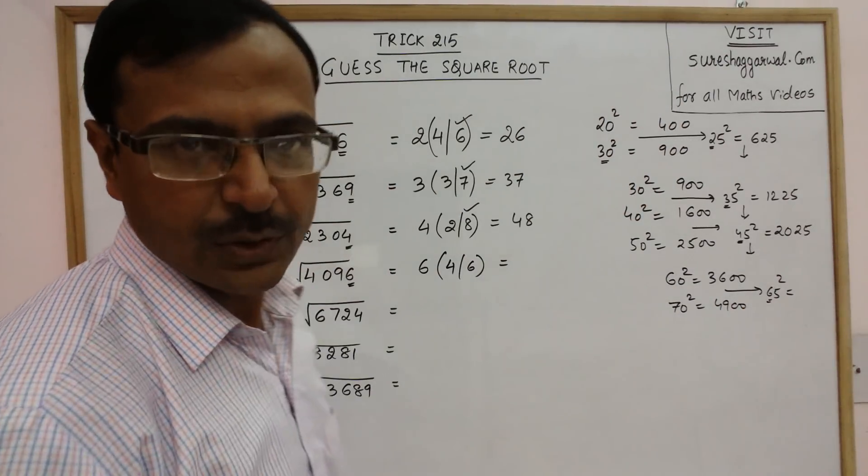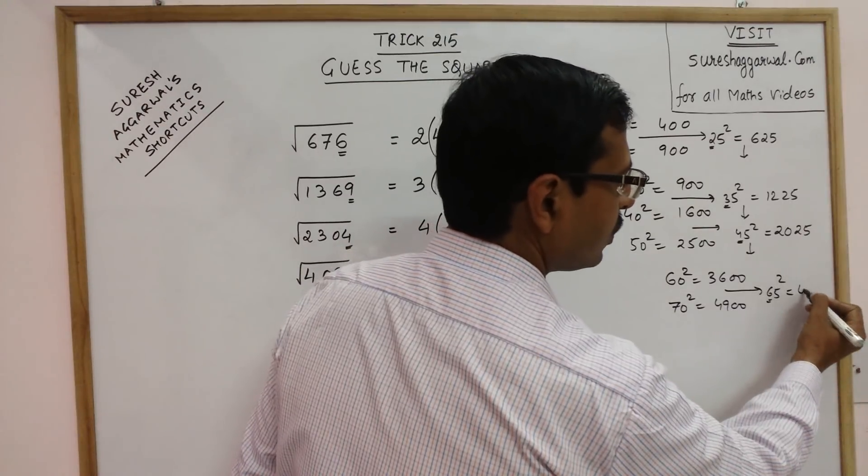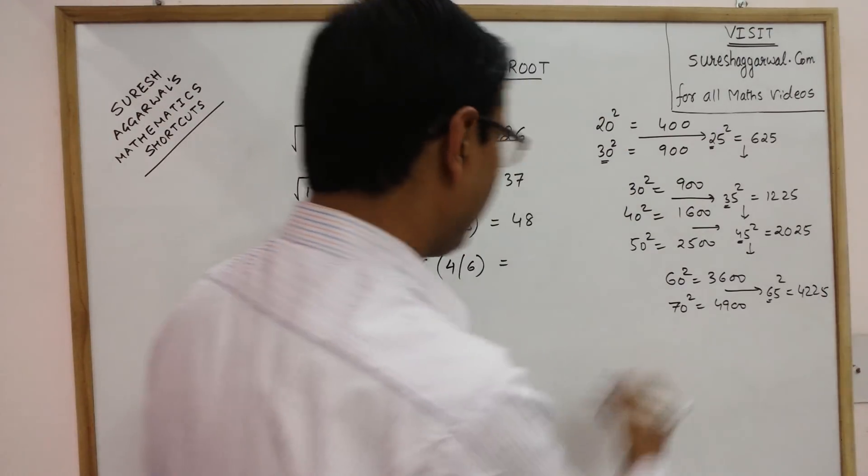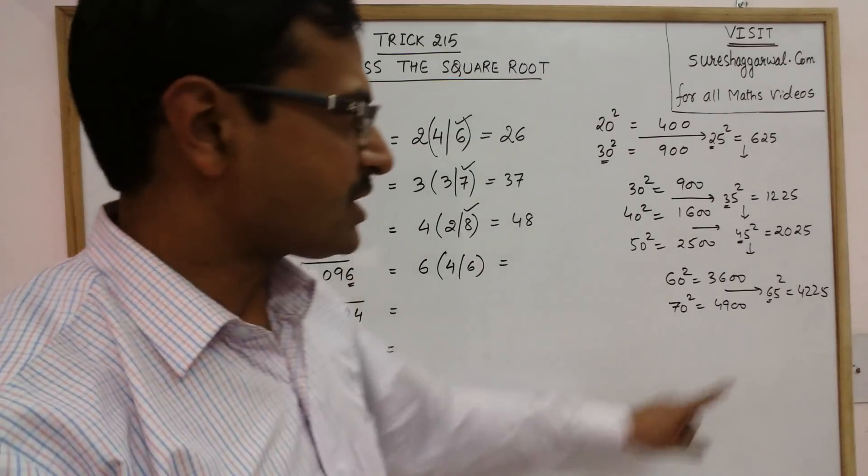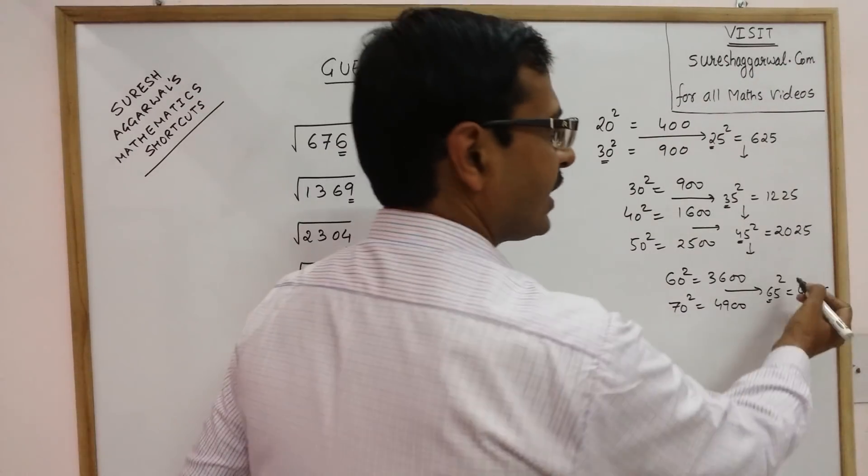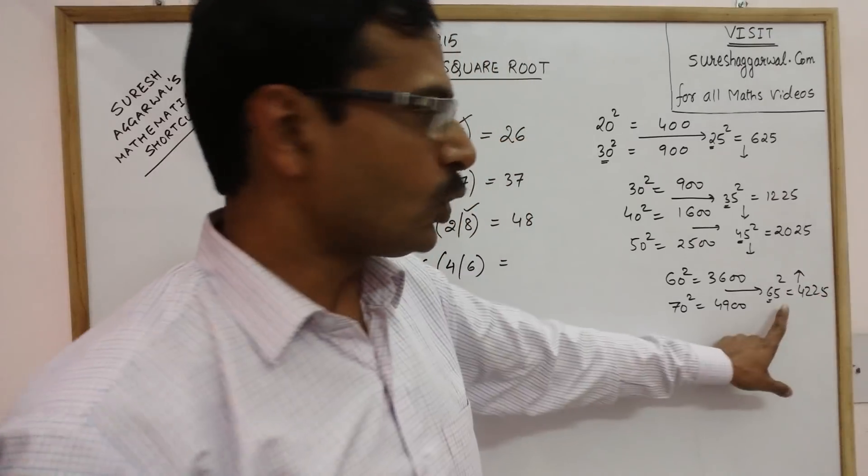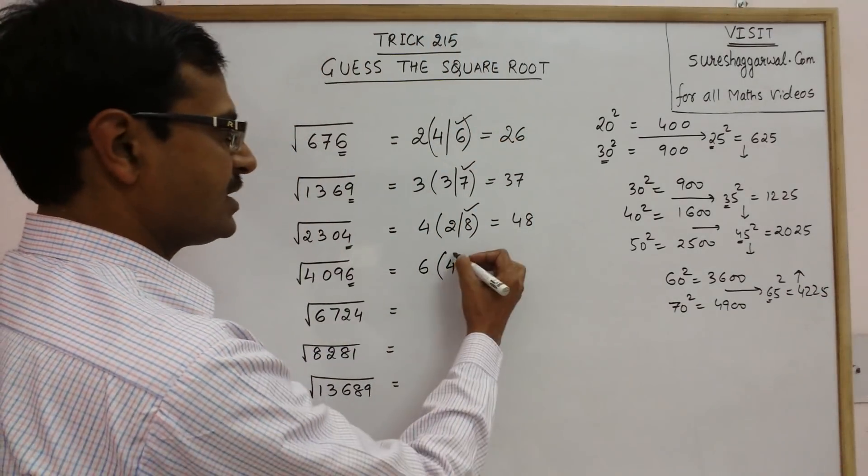6, its consecutive is 7, 6, 7 is 42. So 4225. So now this number 4096 is smaller than this. So our answer will be below 65. So this is 64.